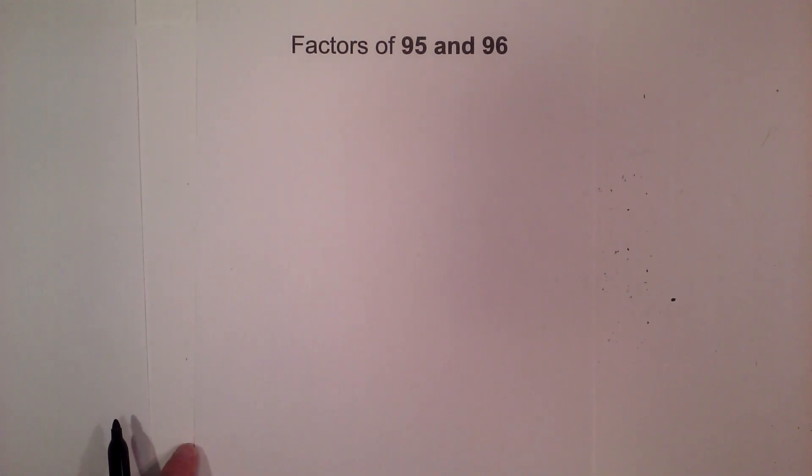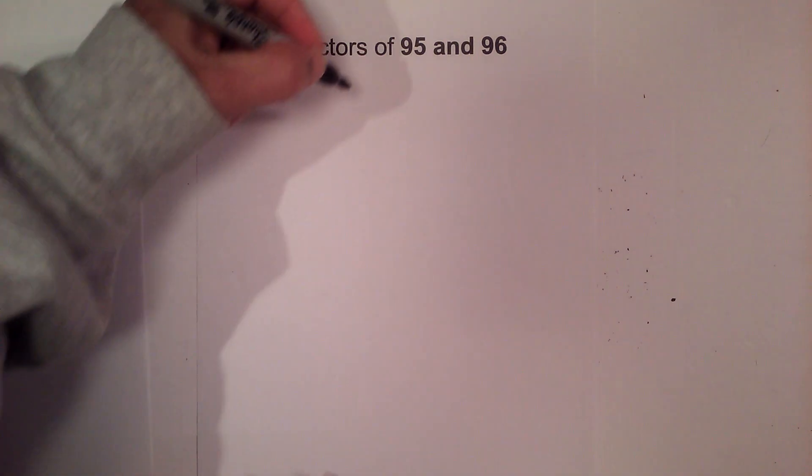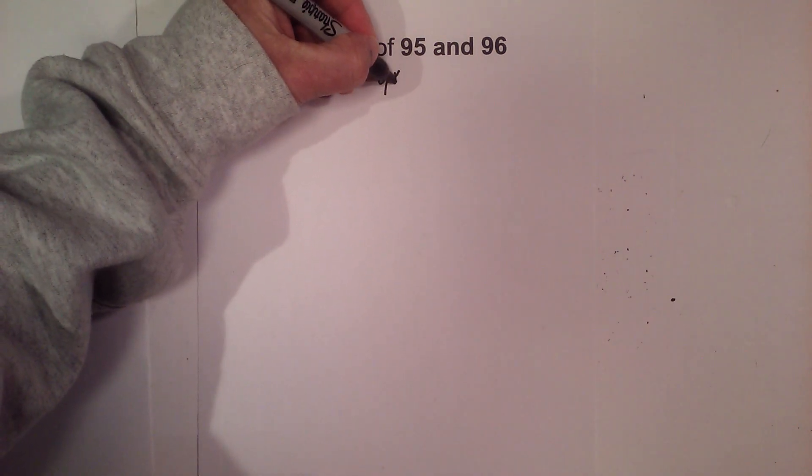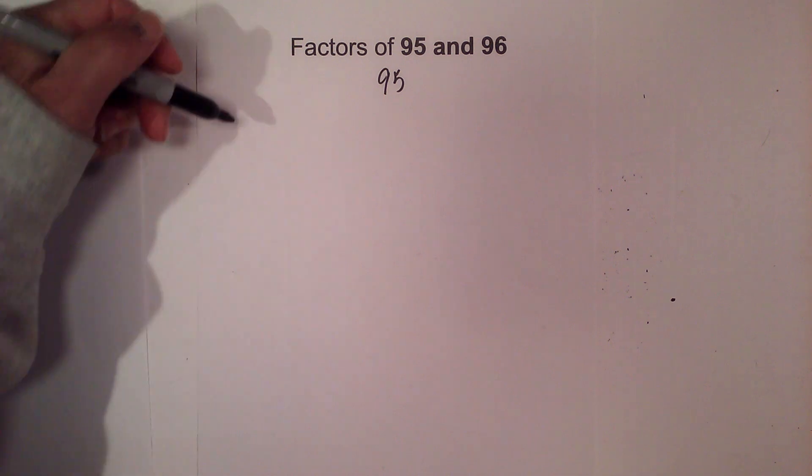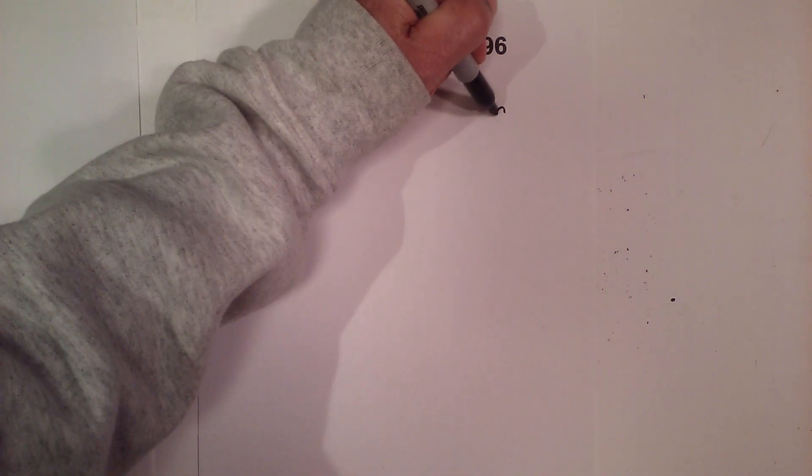Let's find the factors of 95 and 96 and also include the prime factors. Let's get started with 95. 95 is a composite number, so I will start with 1 times 95.